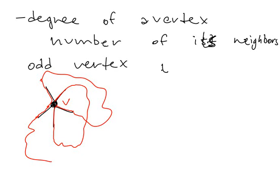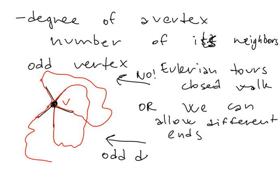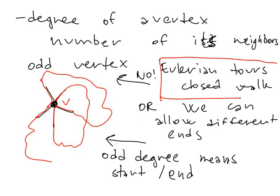In each visit we take even number of edges. We take two of these edges. So after some time we are left only with an edge and we can't proceed further. What does it mean? In our case we can consider Eulerian tour meaning closed walk or we can allow different ends. So in the first case there can be no vertices of odd degree.